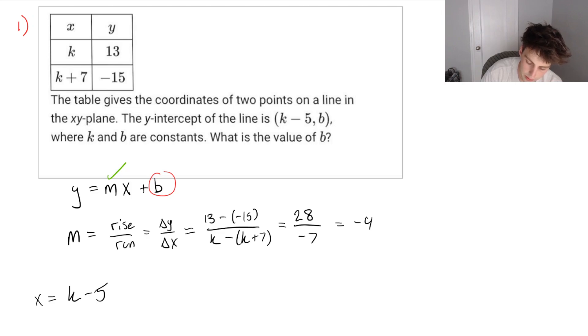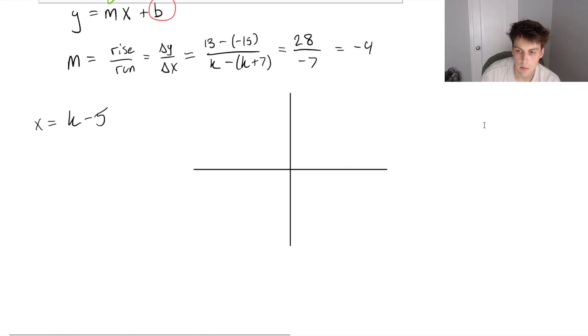And if we were to draw a Cartesian plane, this is our y, this is our x. Suppose that our line looks something like this. Our y-intercept is here. And the value of x is at x equals 0. So we know that k minus 5 should be equal to 0, which tells us that k should be equal to 5.